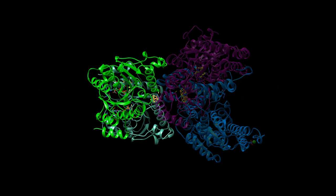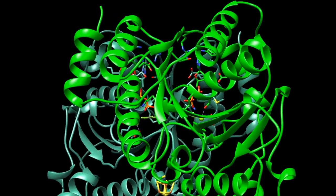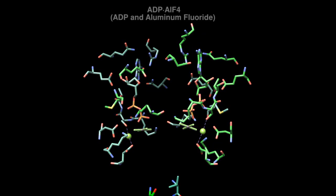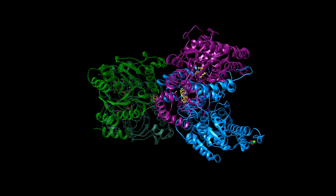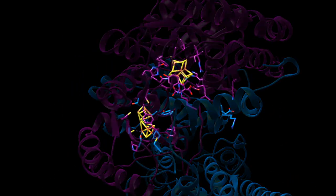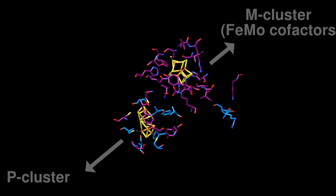Both components are stabilized by aluminum fluoride and ADP. The molybdenum iron protein, referred to as the nitrogenase, contains the P-clusters as well as the iron molybdenum cofactors, often called the M cluster.